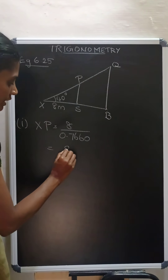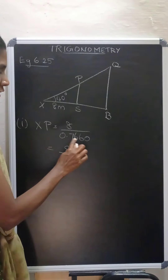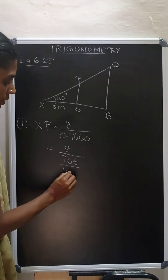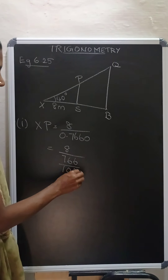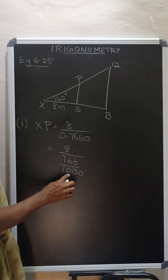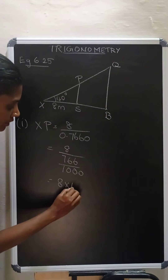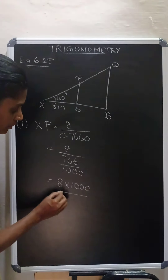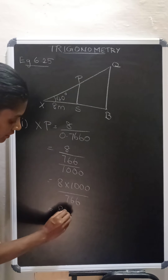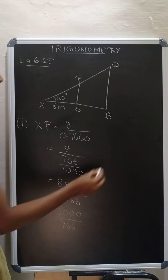So now you need to divide 8 by 0.7660. What you can do is take 8 divided by 766, leaving out the zero after the decimal point. To place the decimal point, divide by 1000, because the point comes after 3 digits. So this becomes 8 multiplied by 1000 divided by 766, which is 8000 divided by 766.